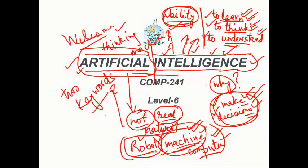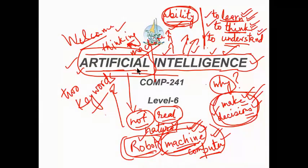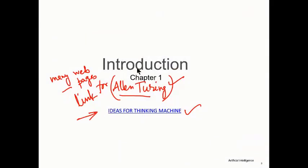A thinking machine means a machine that can think and do something by thinking, just like a human. We will come back to this idea again later.